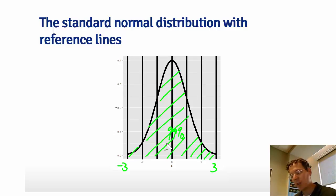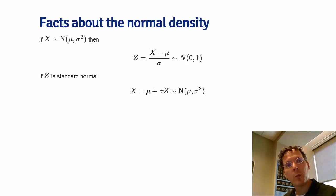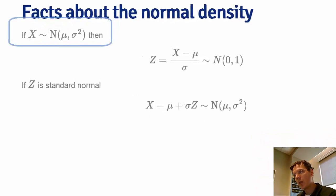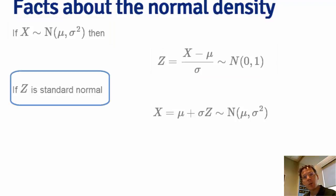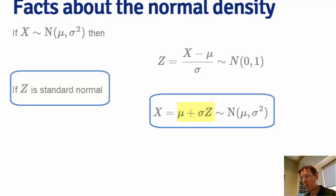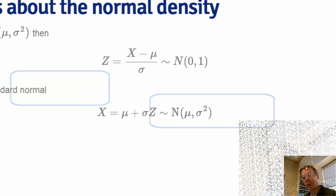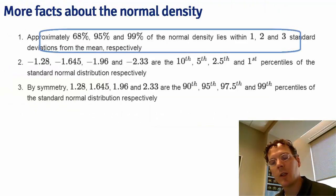These reference probabilities — 68%, 95%, 99% — you should commit to memory. For converting between standard and non-standard normals: if x is normal with mean mu and variance sigma squared, subtracting the mean mu and dividing by the standard deviation sigma gives z, a standard normal. Conversely, multiplying a standard normal z by sigma and adding the mean gives a non-standard normal with mean mu and variance sigma squared. Remember: 68%, 95%, and 99% of the normal distribution lies within 1, 2, and 3 standard deviations from the mean, respectively.